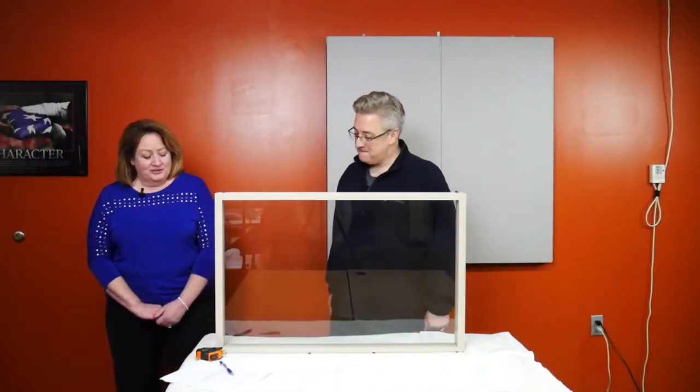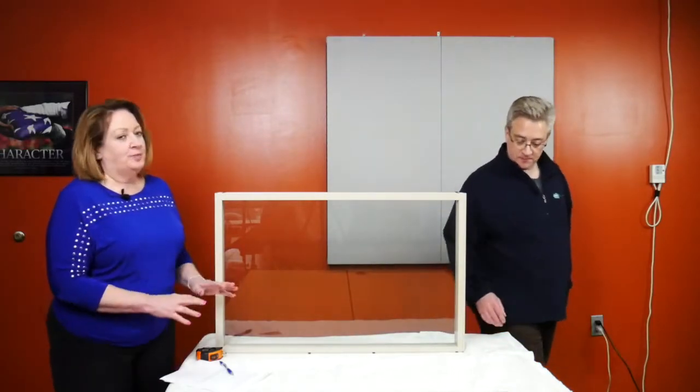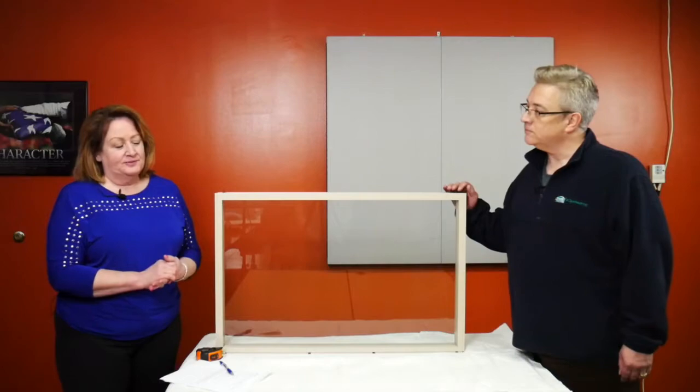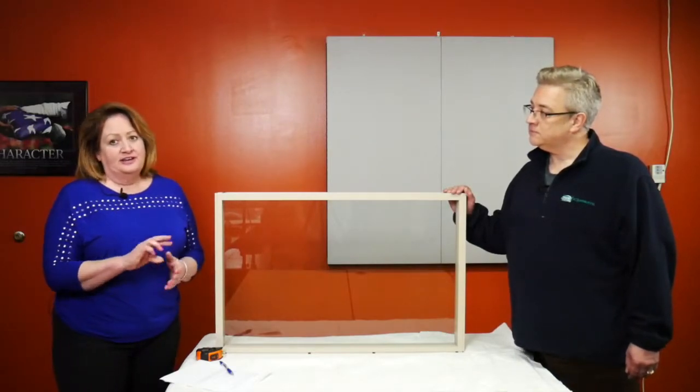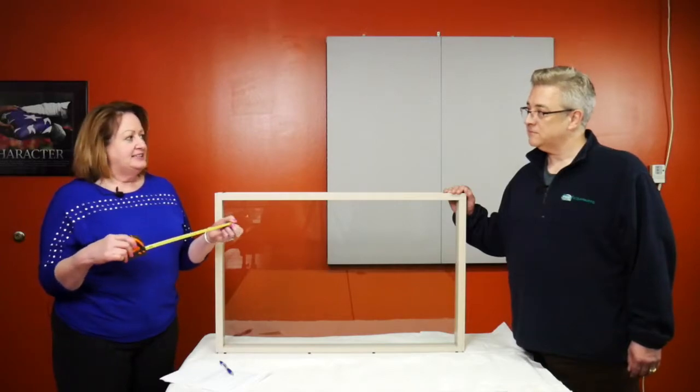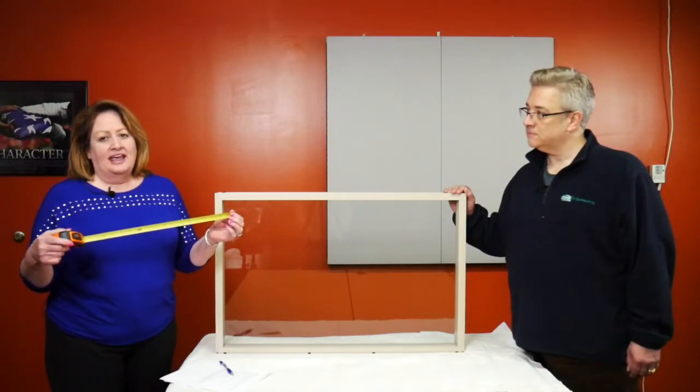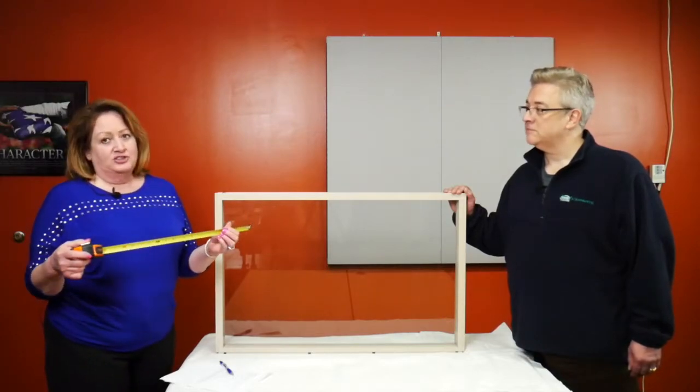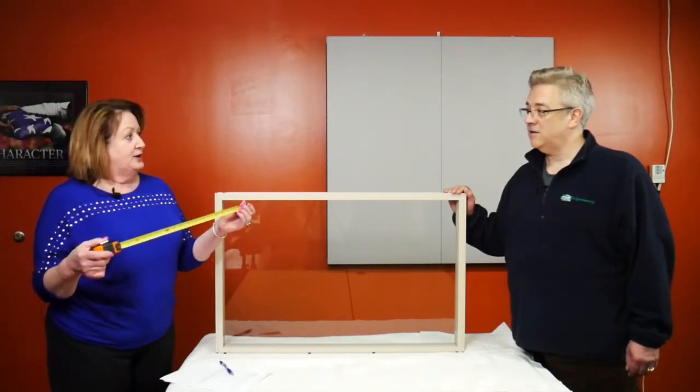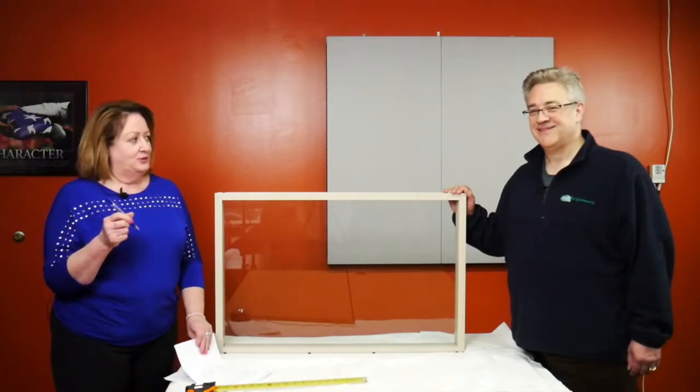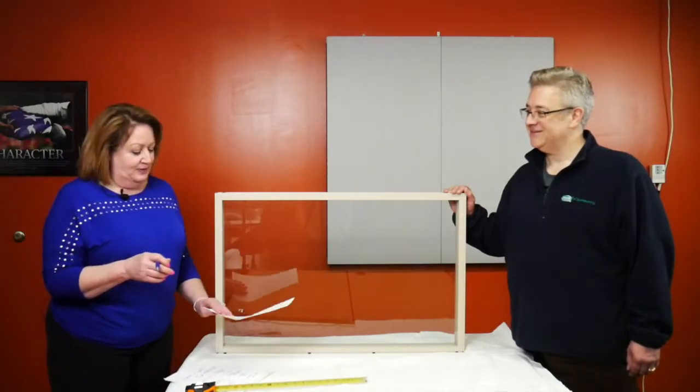Measuring for window treatments can easily be done in three simple steps. To get started you'll need three things. Get a steel tape measure - we say steel because we don't want any flexibility. For example, a cloth tape might stretch as you're measuring. Get a pen or pencil and paper to write down your measurements.